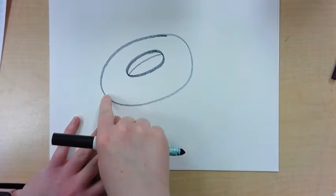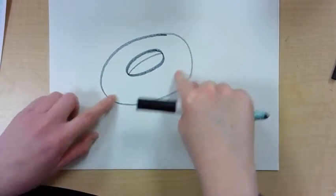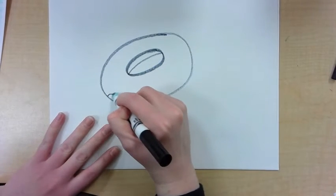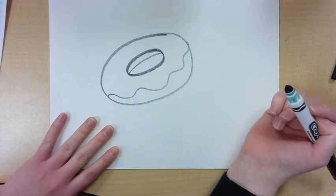And on the big oval, make a wavy line connecting the ends of this big oval. That's going to look like the frosting on the doughnut. That was pretty easy.